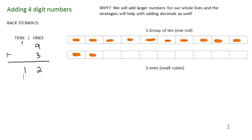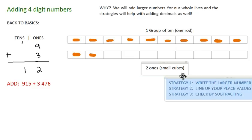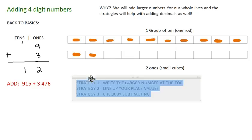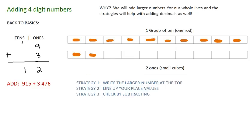So let's actually add a larger digit number, like 915 + 3,476. And I'm going to throw three strategies that I want you to follow in here. Strategy one is write the larger number at the top. Strategy two, line up your place values. And strategy three is check by subtracting. So I like to pull this chart in here, just to help me organize my numbers.